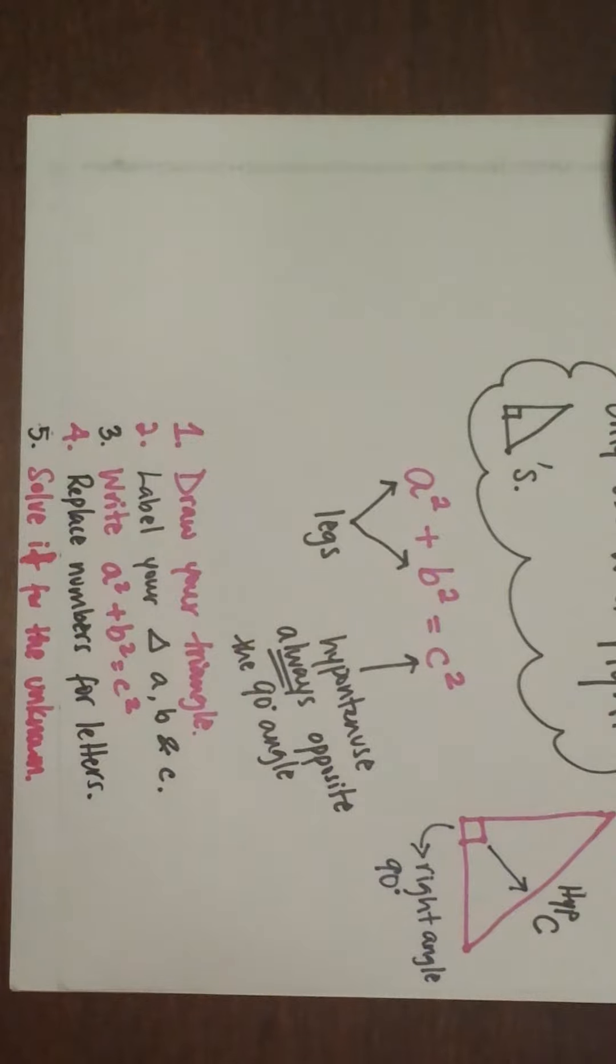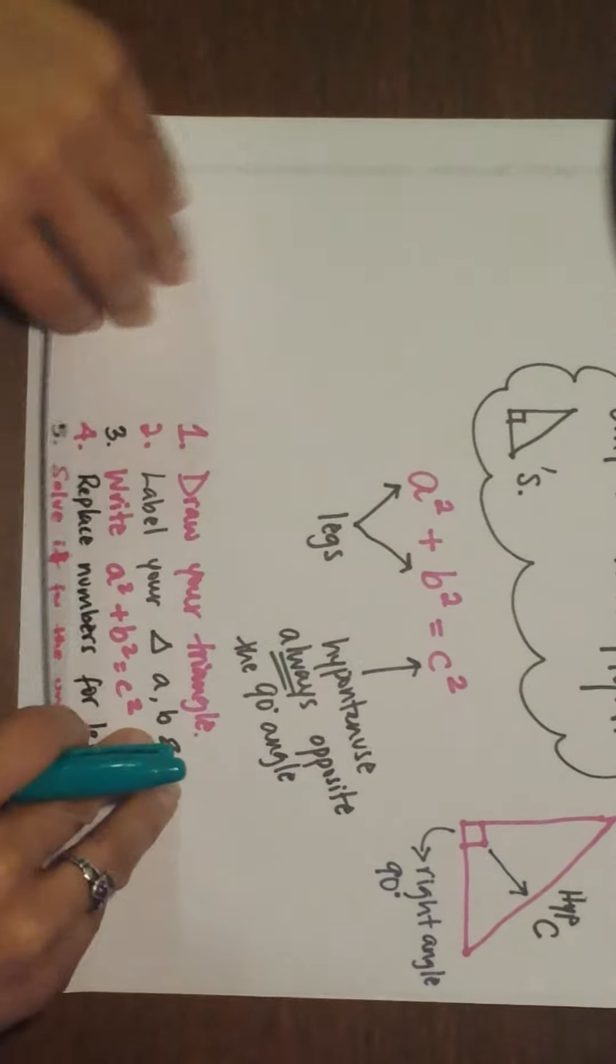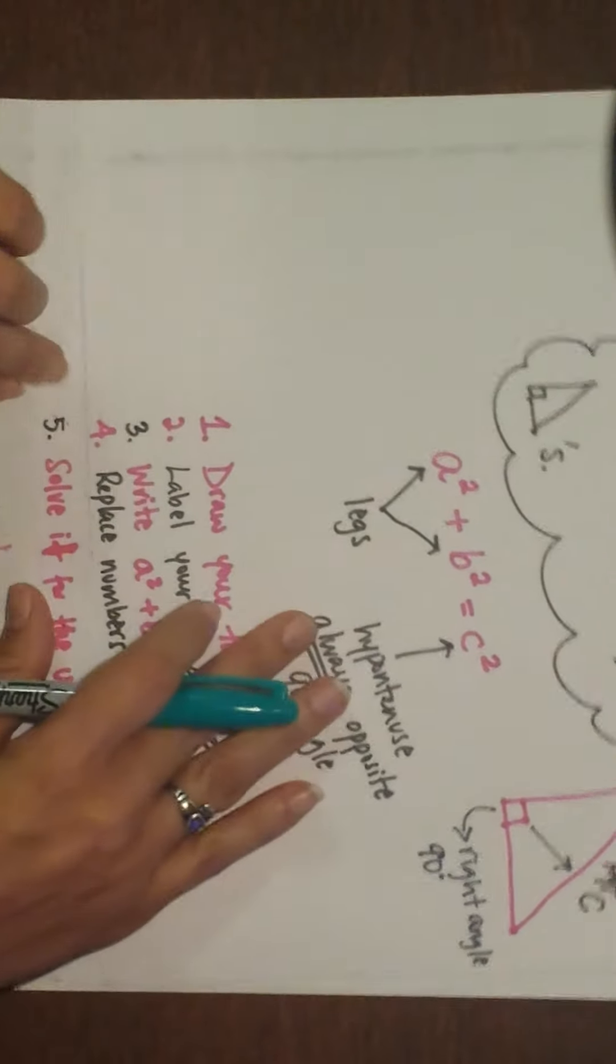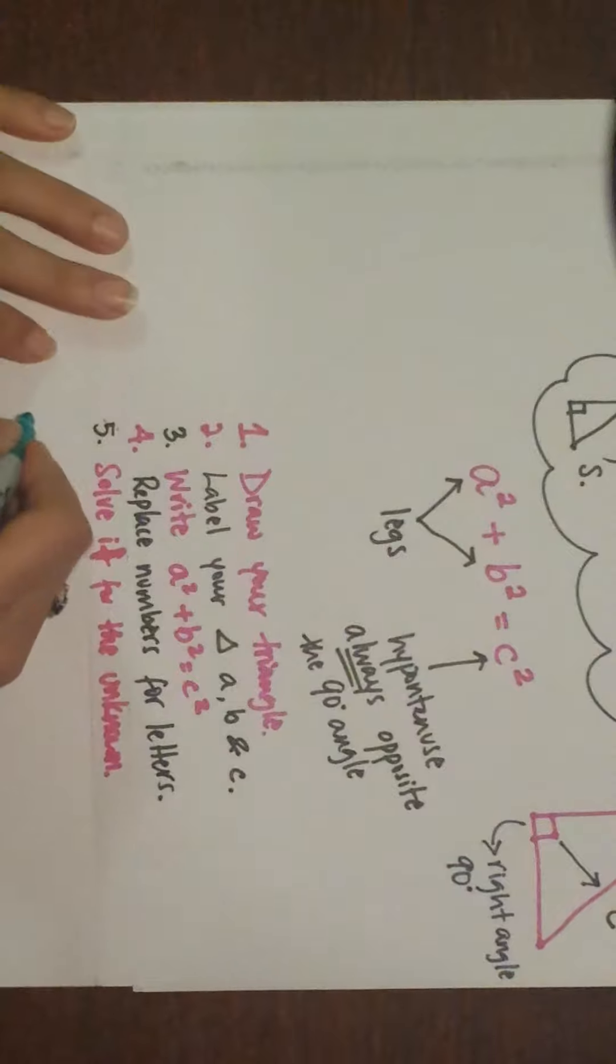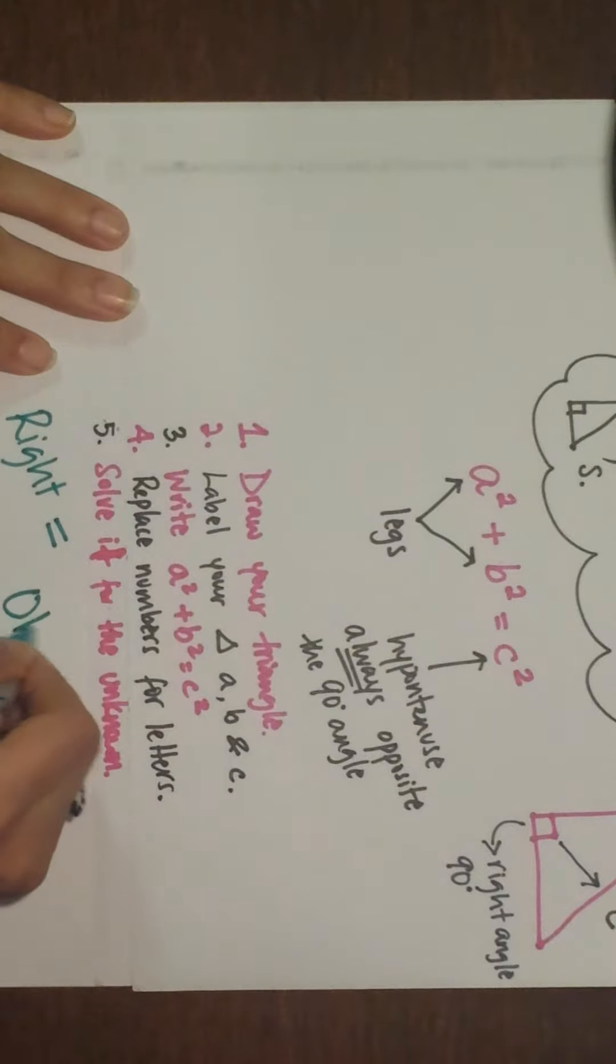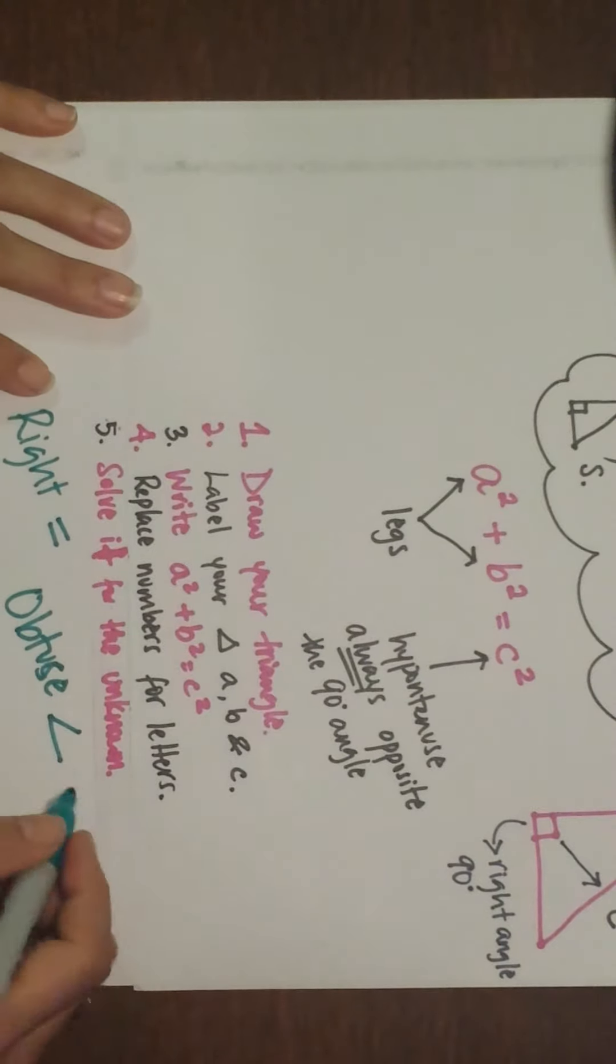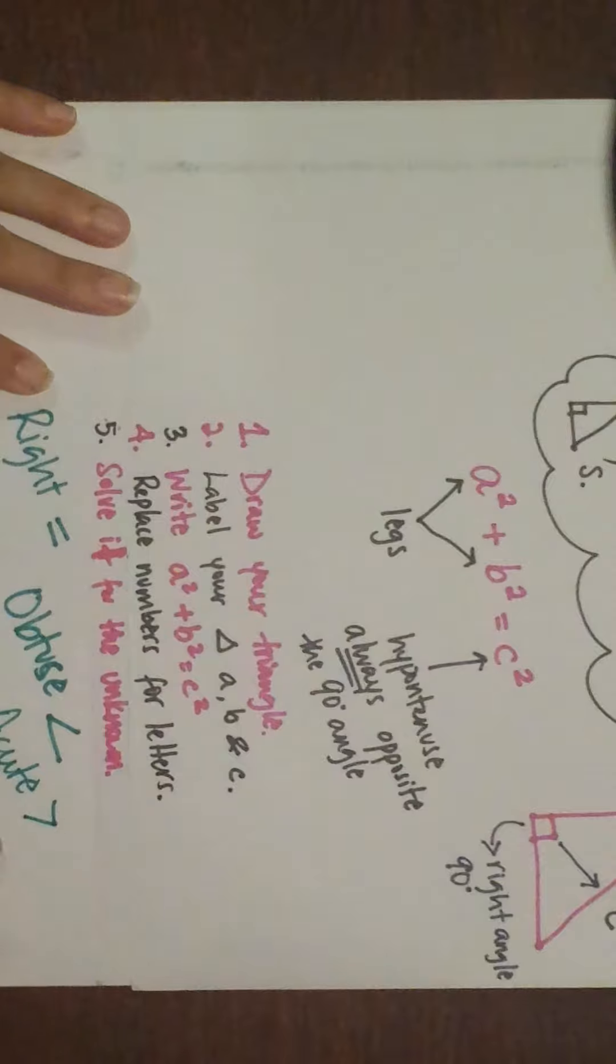One more thing I need us to write down. Right is equal, obtuse is less than, acute is greater than.